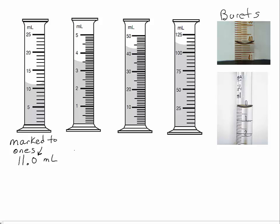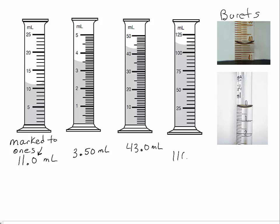With the second graduated cylinder, we should be saying 3.50 milliliters. With the third, 43.0 milliliters. The fourth graduated cylinder is a little tricky because it's marked to the fives. The fives are large enough — much larger than the ones — that we can't really say it's marked to the ones place. This is more like it's marked to the tens, with guidelines at the halfway points. So we can estimate to the ones place, and I would say 110 milliliters, precise to the ones place where the zero is.